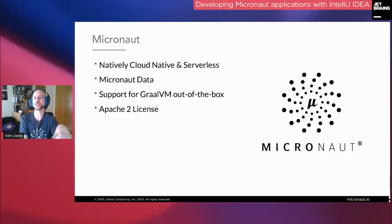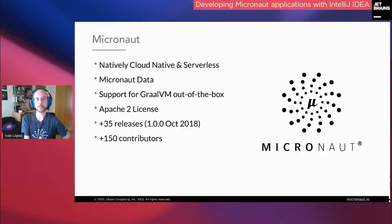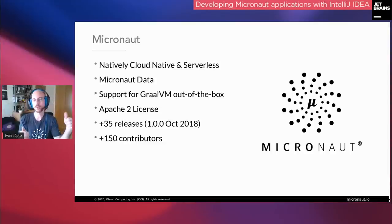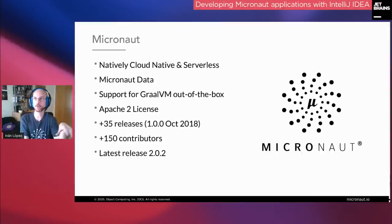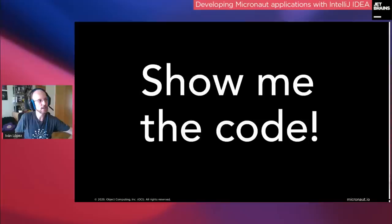Micronaut is Apache-licensed, no strings attached. We've released more than 25 releases — the first, 1.0, was released in October 2018. We have a lot of external contributors, and several modules are maintained by the community: JMS, Apache Ignite, Micrometer, Acme, GraphQL. Our last stable release is 2.0.2, released last week, and the next minor release, 2.1.0, will hopefully be released at the end of this month. Before going to the IDE — any questions so far, Mala?